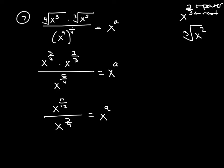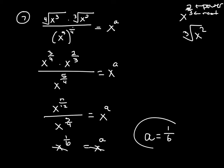When you're dividing two terms with the same base, you're going to subtract the exponents. When you subtract 5/4 from 17/12, you wind up getting 1/6. So I'm going to write this as x to the 1/6 power, and bring down my equals x to the a. If x to the 1/6 equals x to the a, that means 1/6 is equal to a. So a equals 1/6 is your answer.